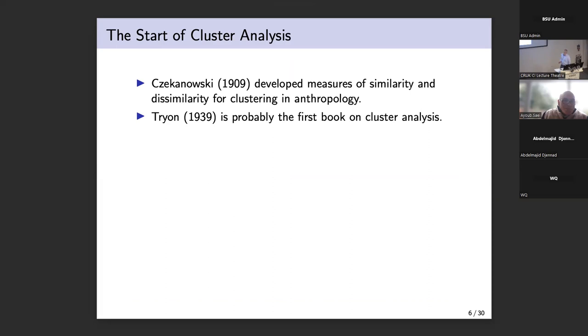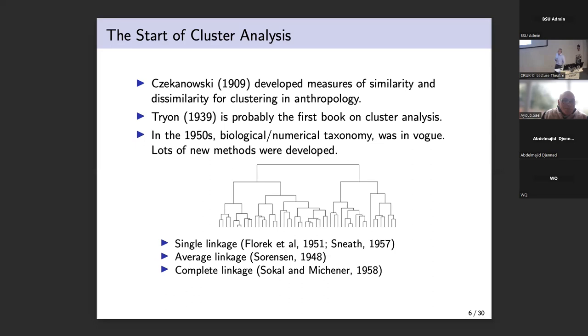Moving on much closer to the present, though we're still a long way in the past, cluster analysis started to really get developed from the early 1900s onwards. Tryon in 1939 actually produced a textbook about cluster analysis. And then in the 1950s, there was just an explosion of interest in clustering in the area of biology and numerical taxonomy. A number of commonly used clustering methods that we hear about nowadays, like single linkage clustering, average linkage clustering, complete linkage clustering, all came out from this period in the 1950s.